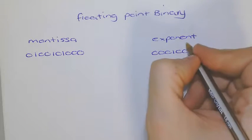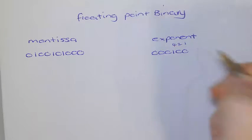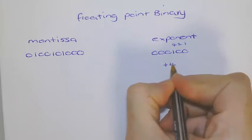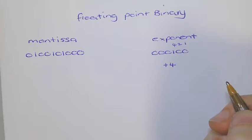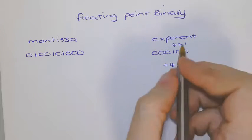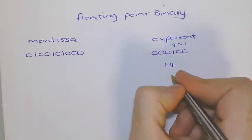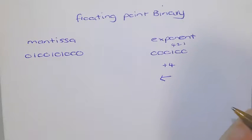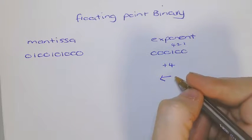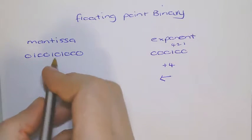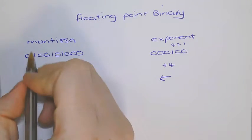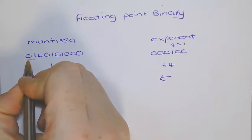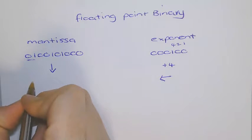But if I was to work out the exponent, I can see it's 1, 2, 4. So, I know my exponent is a positive 4, which means the binary point has floated 4 places to the left. So what I do is I look at this number, and at my first point where the numbers are different, which is there,